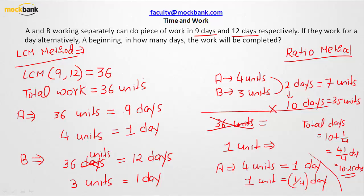What did we do in this video? We tried to solve the problem by using LCM method. We took the LCM of 9 and 12, and came to know that A does 4 units of work in a day and B does 3 units of work in a day. If they are going to work on alternate days starting with A, in two days they would be able to finish 7 units of work.